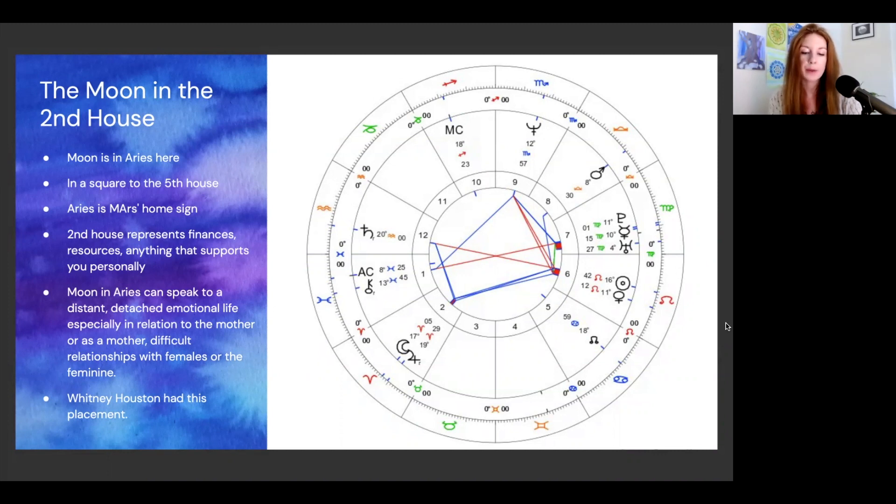The moon here is in a place kind of counter to its nature. Mars's home is hot and dry. The moon is by nature cold and wet. Mars is about assertion, independence. The moon is about receptivity, interdependence. So the moon in Aries can definitely speak to a distant, more detached emotional life, especially in relation to the mother or as a mother. Difficult relationships with females or the feminine.